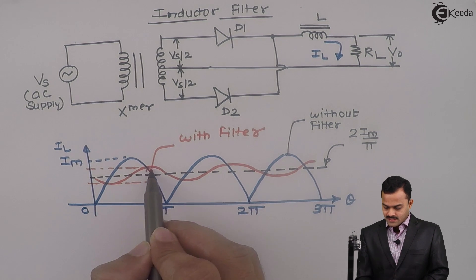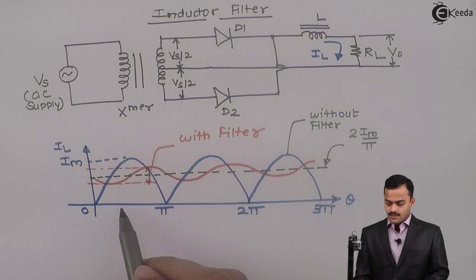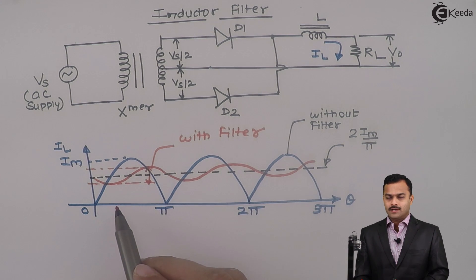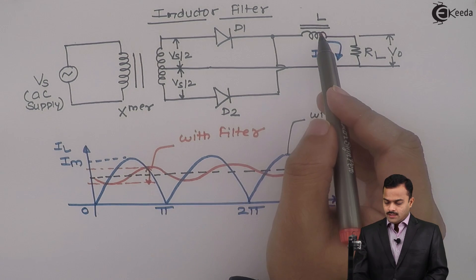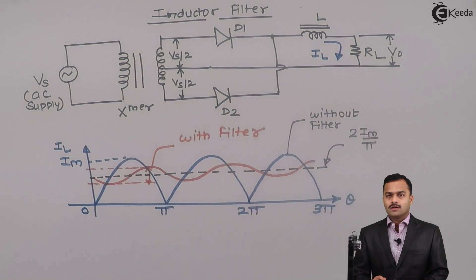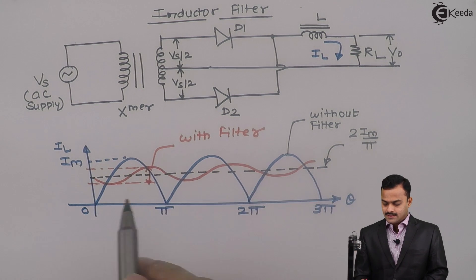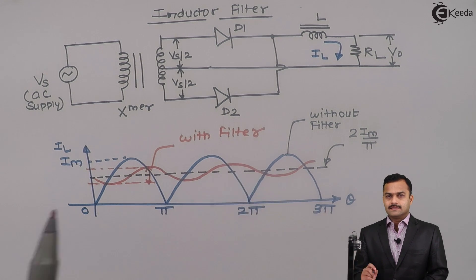This much component is only present whereas initially it was a very high AC component present. So if you connect the inductor in series with a load for filtering purpose, the current waveform you will get like this, very close to perfect DC.